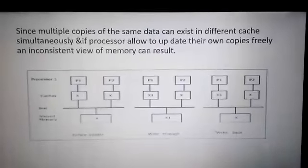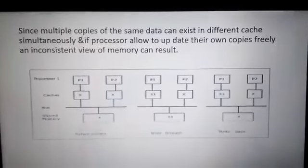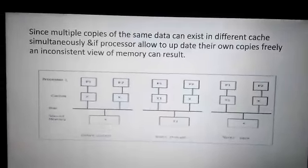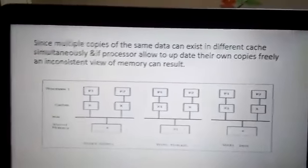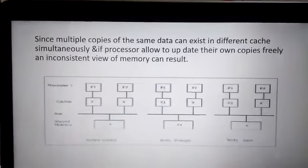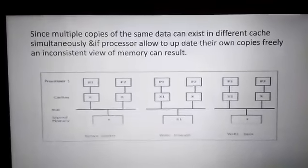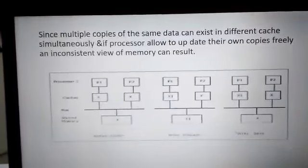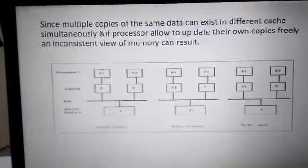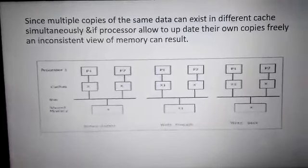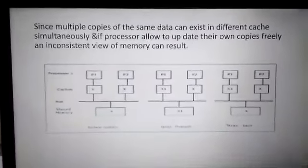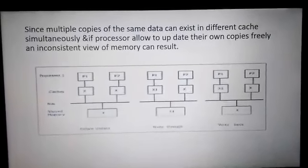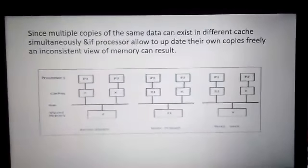Lekin agar processor p1 ne kisi tarah ka koi update kiya, matlab p1 processor ne apne cache mein changes kar liye, aur uska reflection shared memory mein hota hai, toh data change ho gaya. Ab hum dekh sakte hain ki p1 ke cache mein data hai x1 aur p2 mein data hai x. Kyunki p1 ne changes kiya data mein, uska reflection shared memory mein dikh raha hai. Toh data inconsistent ho gaya — cache coherence problem arise hui.